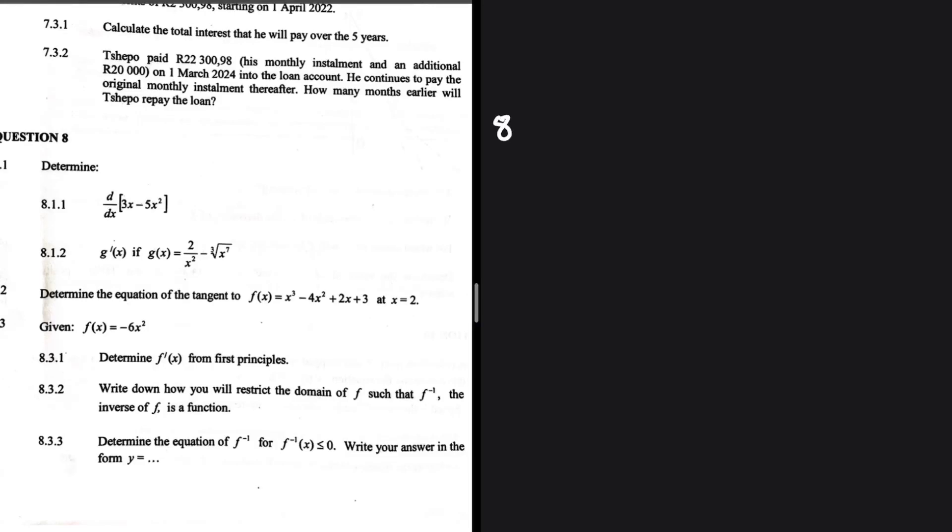Okay, let's take a look at 8.1.1. We have d over dx of 3x minus 5x squared. We can simply use the power rule here to determine that, which we're going to get 3 minus 10x. No complications there. We're just using the power rule.